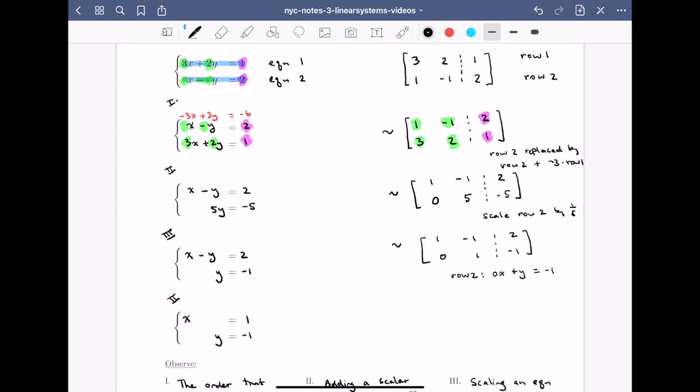Finally, in the last step, what I'll do is I'll take row 1 and I'll replace it by row 1 plus row 2, leaving me with the final matrix 1, 0, 1, 0, 1, minus 1.